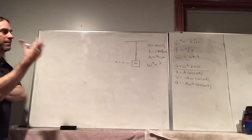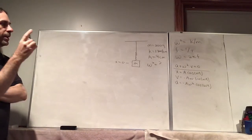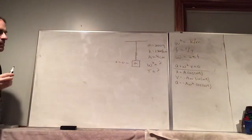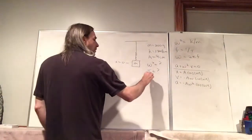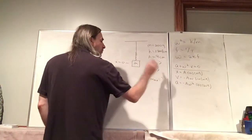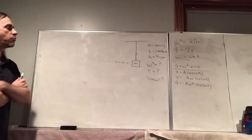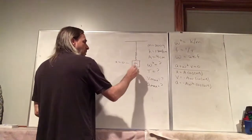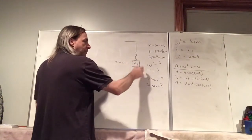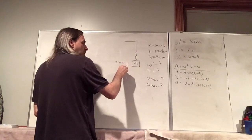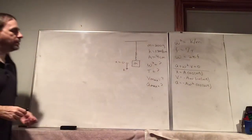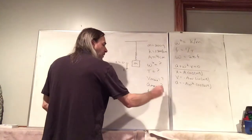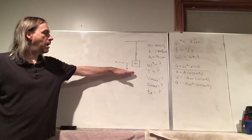From the angular frequency we can find everything else — we can find the period. I also want to know the maximum velocity of this object, and we can find maximum acceleration as well. It's going to start at x equals A — we'll say down is our positive direction — and I want to know how long it's going to take to get back to equilibrium. Let's call that t_e: how long from maximum amplitude to crossing x equals zero.